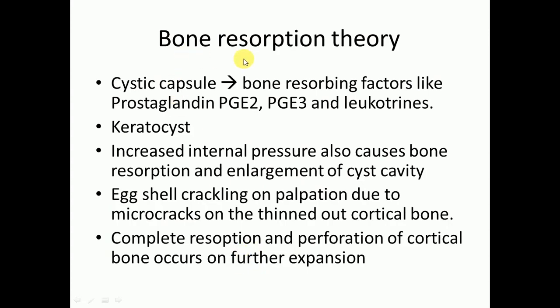Now we will discuss about the bone resorption theory. The cystic capsule contains different bone-resorbing factors like prostaglandin E2, E3, and leukotrienes.